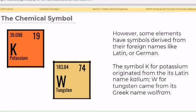However, some elements have symbols derived from their foreign names like Latin or German. The symbol K for potassium originated from the Latin name kalium and W for tungsten came from its Greek name wolfram.